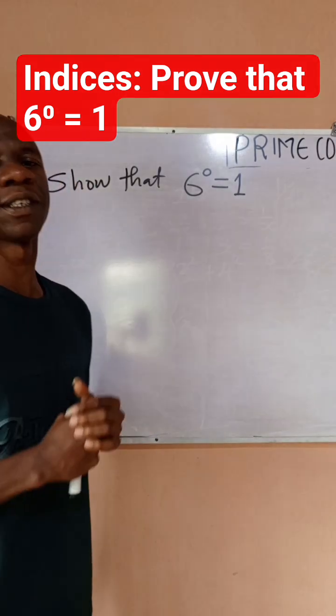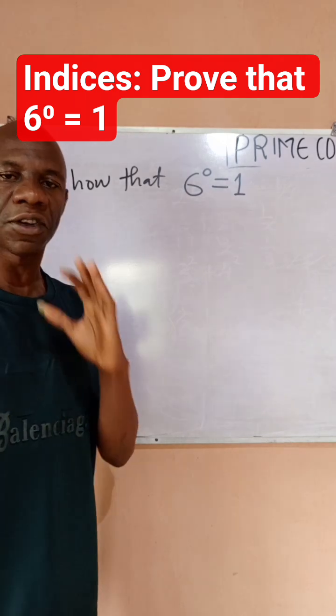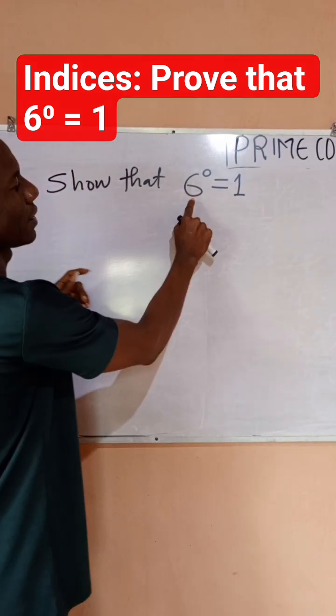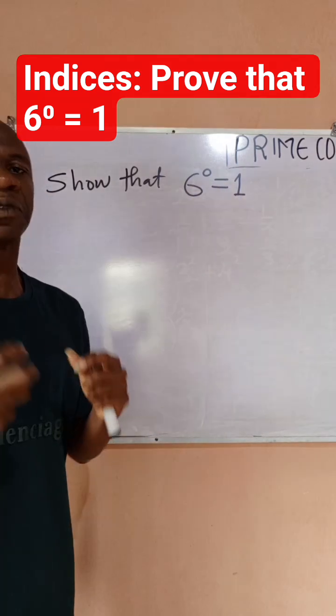Hello guys, this is Prime Concept. In this video I want to do a simple problem or proof on indices. The question says show that 6 raised to power 0 would be equal to 1, so we want to prove this.